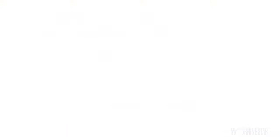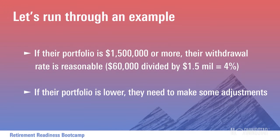Let's look at an example. We'll assume a 65-year-old couple who need about $100,000 in income from all sources. About $40,000 of that will come from Social Security and a small pension, so they need their portfolio to supply $60,000. To support a $60,000 annual withdrawal at a 4% sustainable rate, their portfolio needs to be at least $1.5 million. If it's lower, they may need to delay retirement or rein in spending.